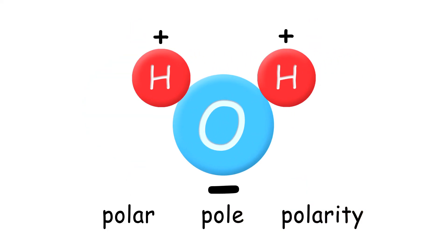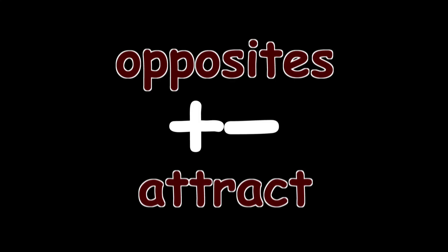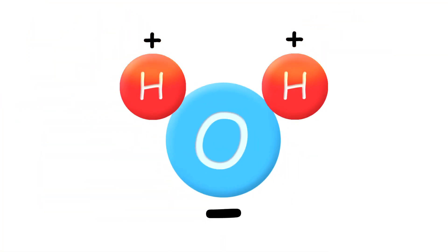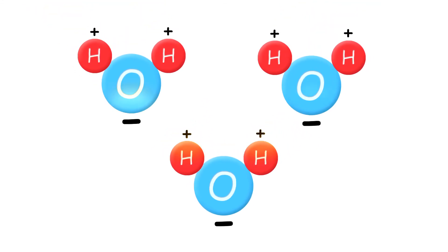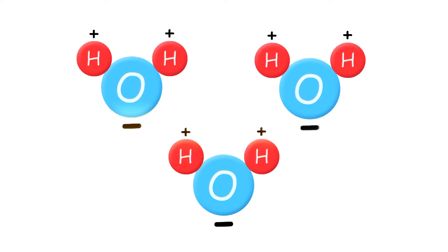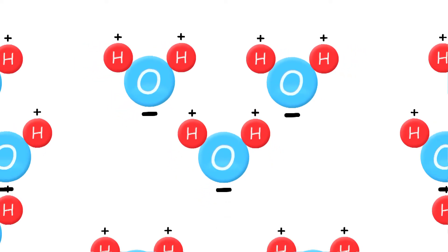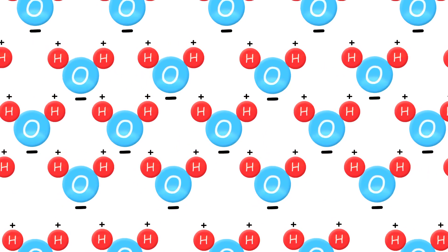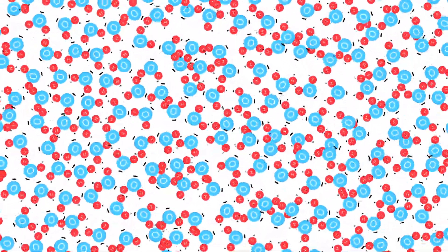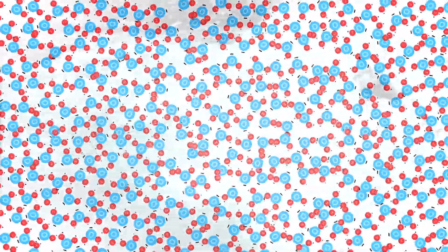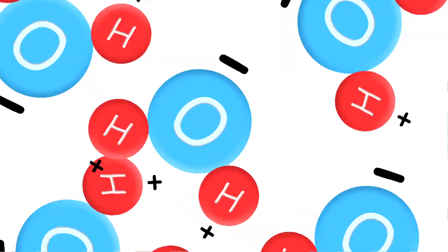One side has a slight positive charge, the other a slight negative charge. Opposites attract, so the slightly positive hydrogen side of every H2O molecule attracts and is attracted to the slightly negative oxygen sides of other H2O molecules in all directions. These bonds, called hydrogen bonds, are what hold water together.